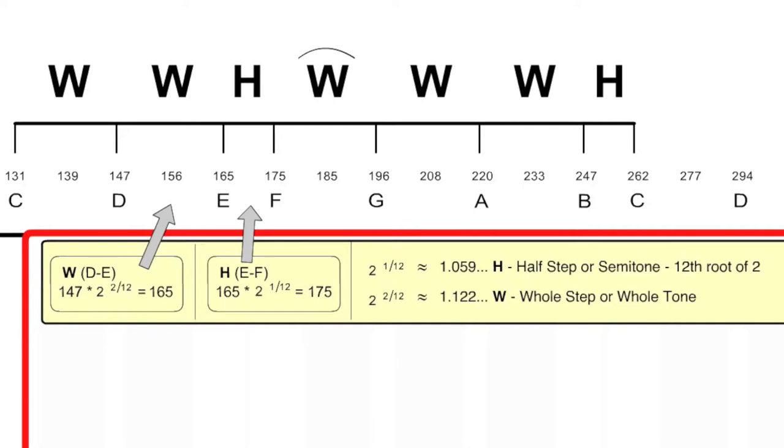And here again is the two diatonic intervals. The whole tone and the half tone. And again, you can see that the interval ratio, the two to the two twelfths, or two to the one twelfths, multiplied by the lower number, equals the higher number.